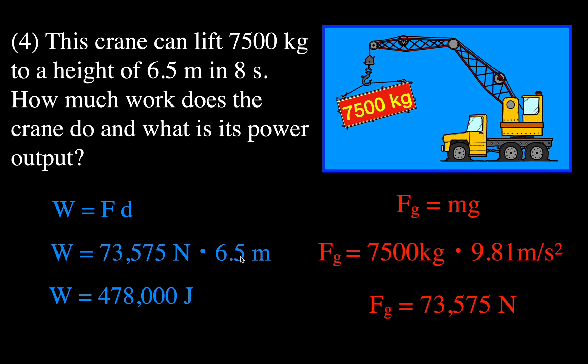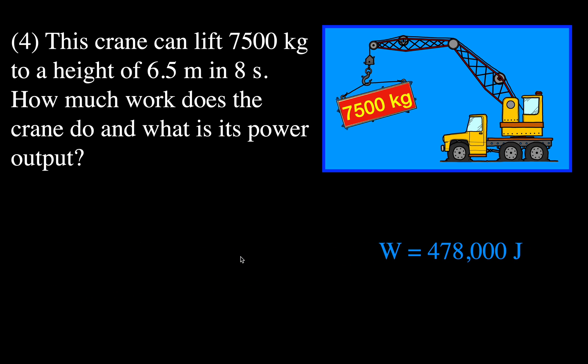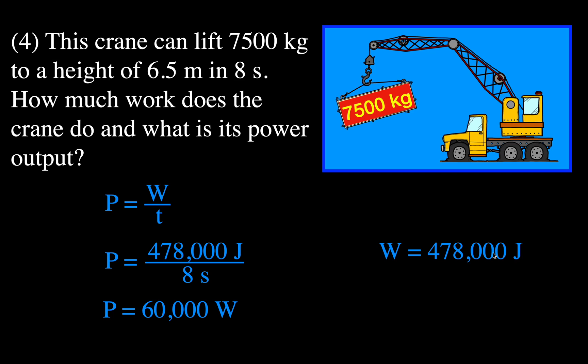Now we calculate the work: force times distance = 73,575 newtons × 6.5 meters ≈ 478,000 joules. We know the work and the time is 8 seconds, so we calculate the power: 478,000 joules divided by 8 seconds gives a power rating of approximately 60,000 watts for the crane. This is a multi-step process: convert mass to force, multiply by distance to get work, then divide by time to get power.